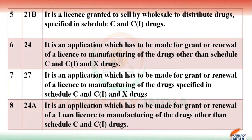Form 21B is a license granted to sell by wholesale or to distribute drugs specified in Schedule C and C1 drugs.